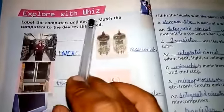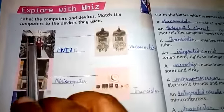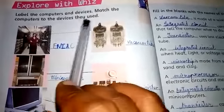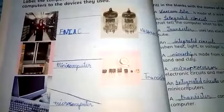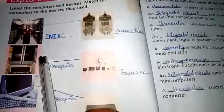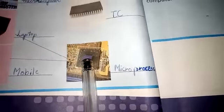Label the computers and devices. Match the computers to the devices they use. ENIAC: vacuum tubes. Mini computers: transistor. Microcomputers: IC. Laptop, mobile phone: microprocessor.